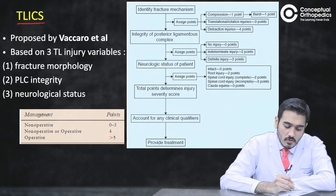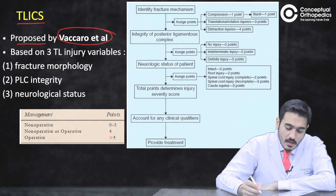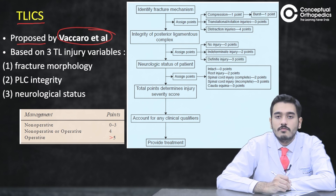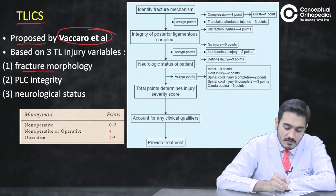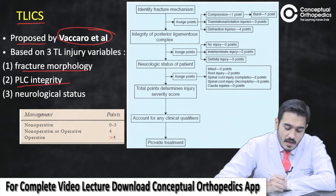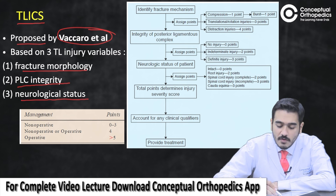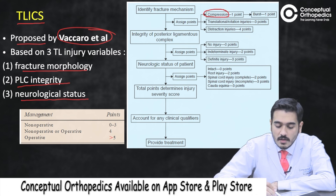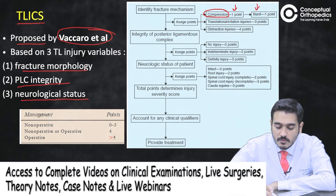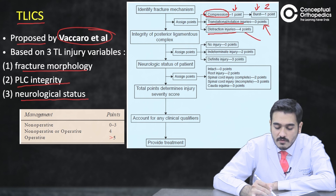The TLICS — Thoracolumbar Injury Classification and Severity Score — was proposed by Caro et al. He defined three parameters with a score to guide management. The first parameter is fracture morphology: compression type = 1 point, burst fracture = 2 points, translational or rotational injury = 3 points, distraction injury = 4 points.